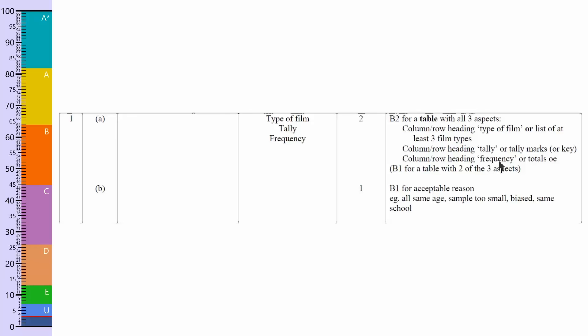If you missed out frequency, which is quite common, then you get one mark. For the second question, you can say any acceptable reason. And they've given some examples here, which is all same age, sample too small, bias, same school. And there are a few others that you can get the mark for.